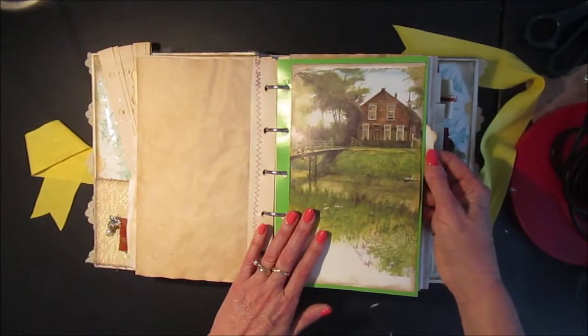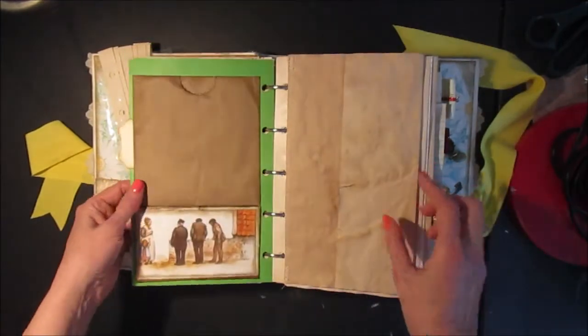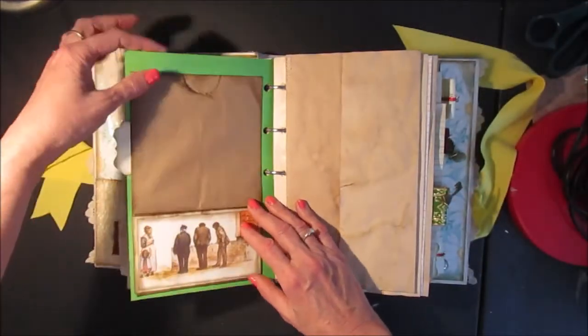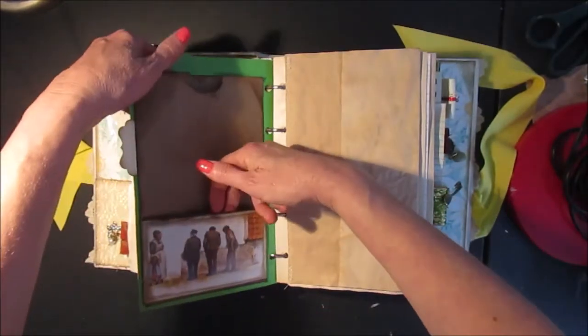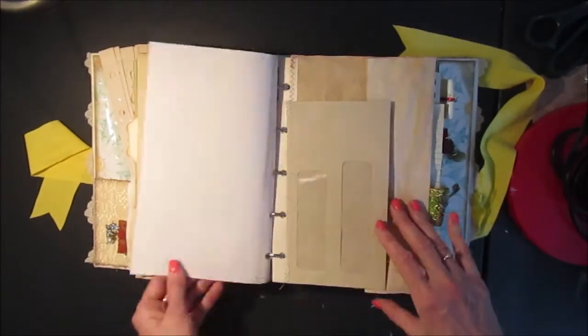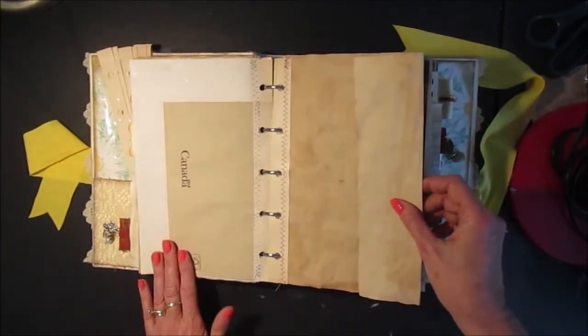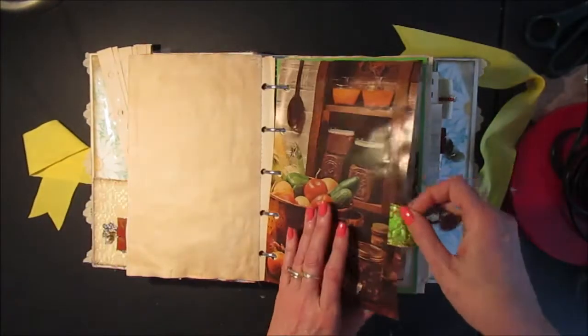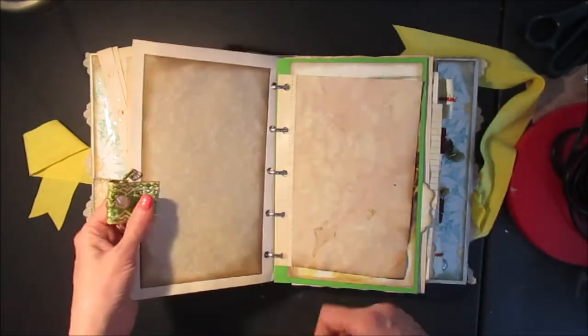And here's another divider so you can write your titles on there. And then I've got a paper bag attached inside here and you can tuck something in there. More papers, envelopes. So you can cover these up. And here's another image from the Better Homes and Gardens book.